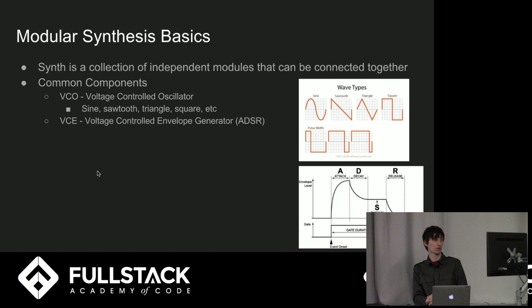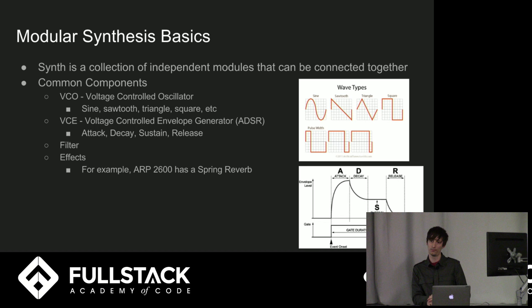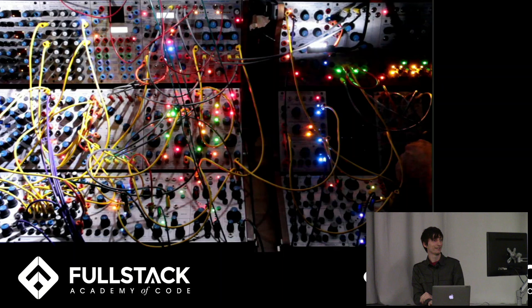Then you have filters, which basically affect the frequencies being passed through to the final output. You have effects — for example, the ARP 2600 that I showed in the last slide had a built-in spring coil reverb, which was actually pretty awesome to use. And lastly at the output you usually have a voltage controlled amplifier, or basically a big volume knob. All of this was patched together — and tell me if this looks like any of your code. This is actually a Buchla synth, and there's a huge community of people that still go crazy with this stuff.